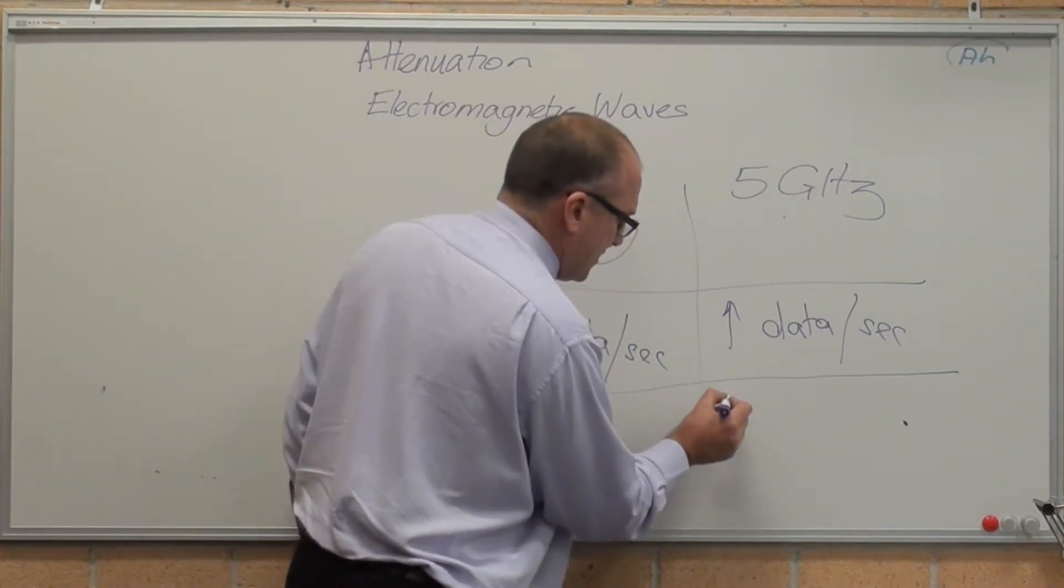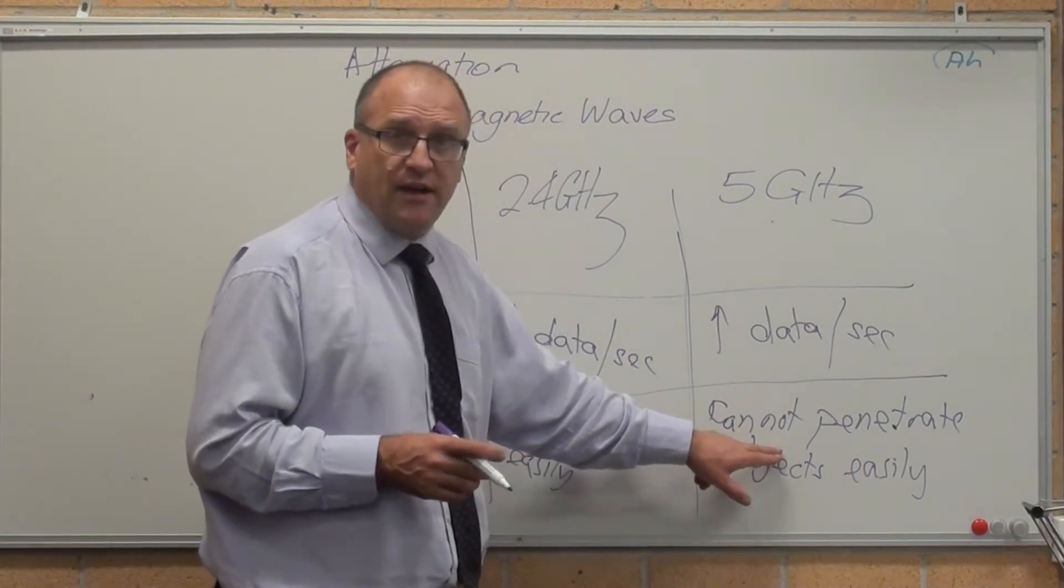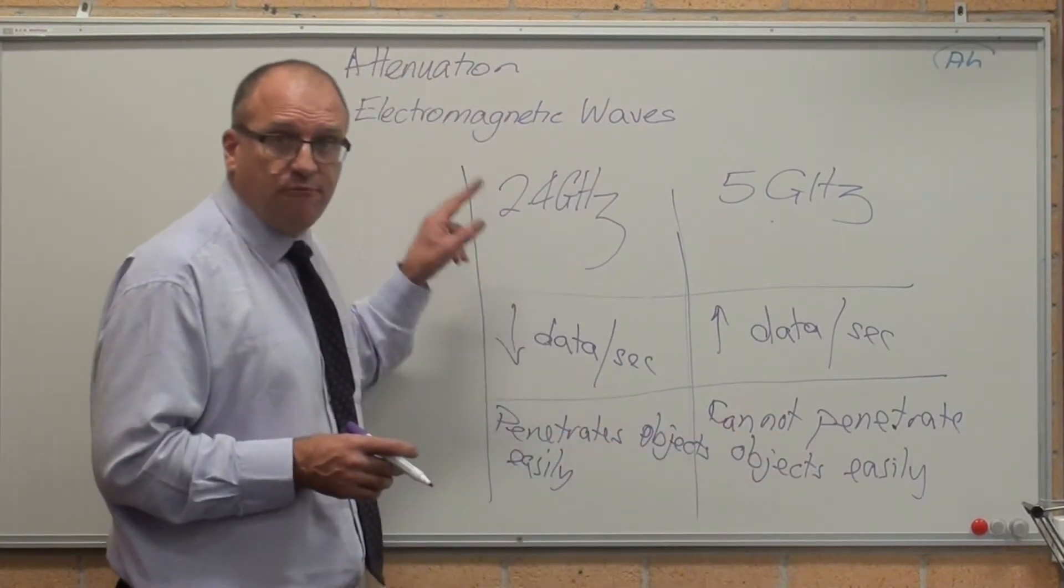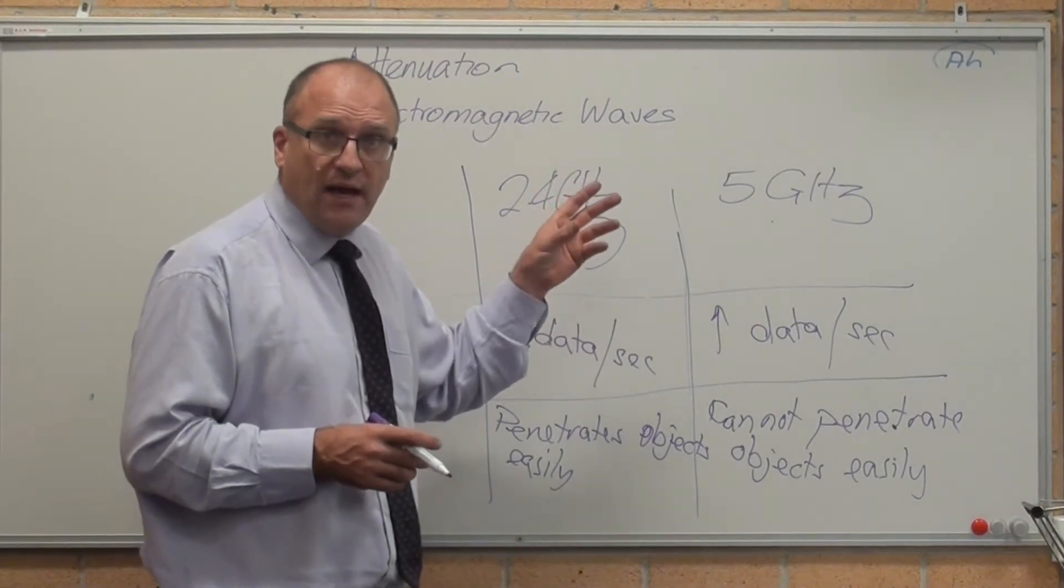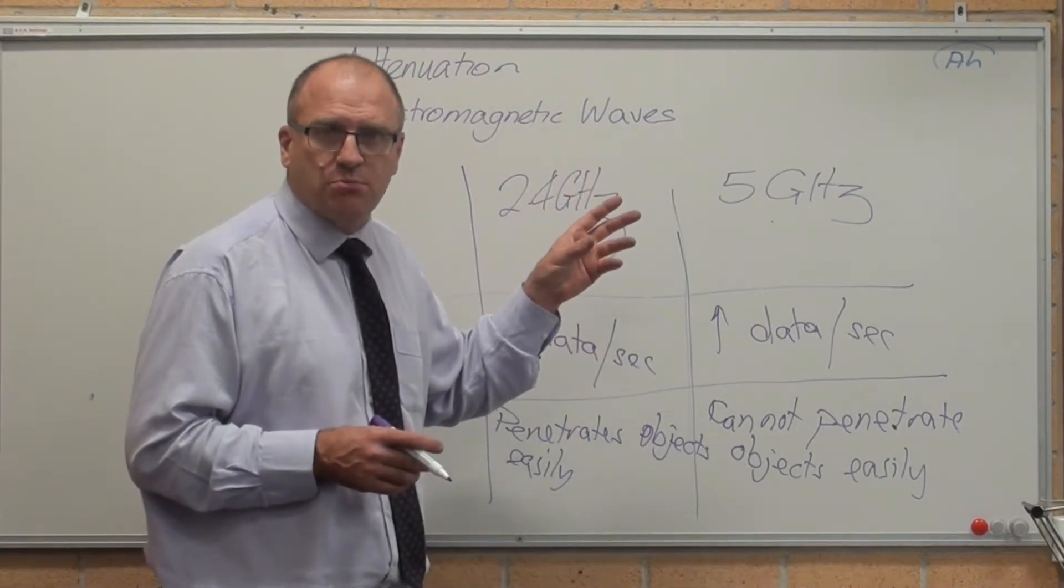So, the attenuation is 5 GHz cannot penetrate objects as easily as 2.4 GHz. The lower wavelength of an electromagnetic wave lets it penetrate objects more effectively.